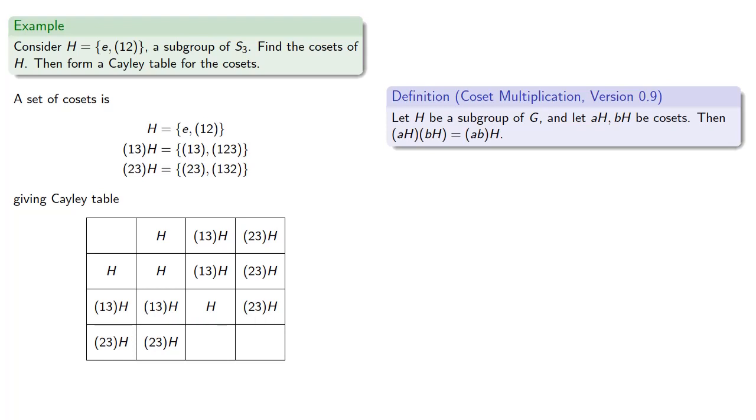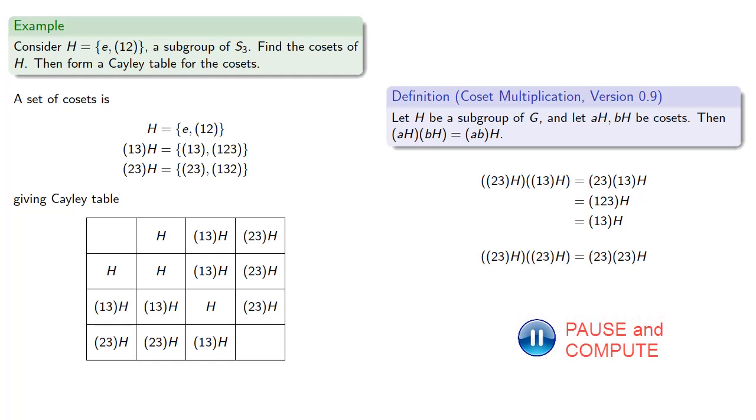And we can complete the third row of our Cayley table. (2,3)H by (1,3)H, well that's (2,3)(1,3)H, which is (1,2,3)H. And since (1,2,3) is an element of (1,3)H, then this product is (1,3)H. And finally, our last product (2,3)H by (2,3)H gives us...